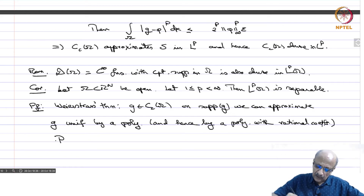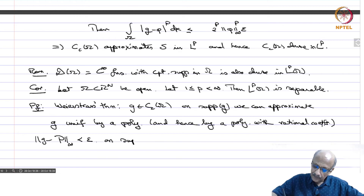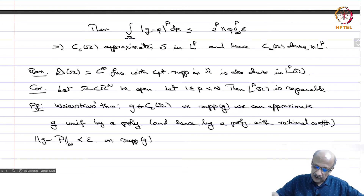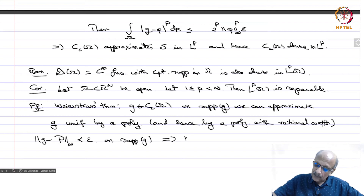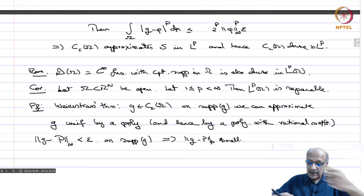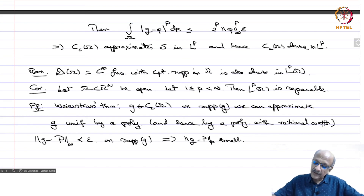We can approximate G by a polynomial with rational coefficients. If P is such a polynomial with rational coefficients and norm G minus P infinity is as small as we like, then outside the support of G we set P equal to 0. This gives an Lp function, since the support is compact with finite measure. This will also imply that norm G minus P in Lp is small. Polynomials with rational coefficients on a compact set form a countable set.